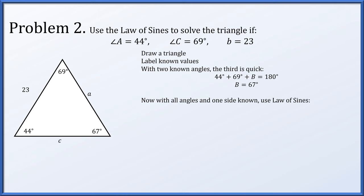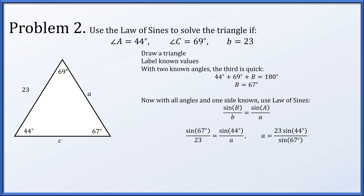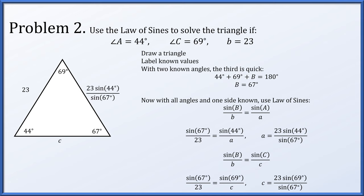Now that we know all the angles and one side, we can use the law of sines. Sine of B over b equals sine of A over a. Replacing known values, the missing length a is 23 times the sine of 44 degrees divided by the sine of 67 degrees. Similarly, sine of B over b equals sine of C over c, giving us c equals 23 times the sine of 69 degrees divided by the sine of 67 degrees. So now we have solved for all angles and all sides.